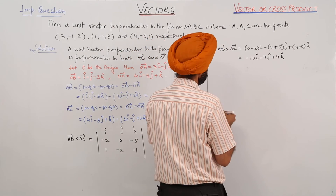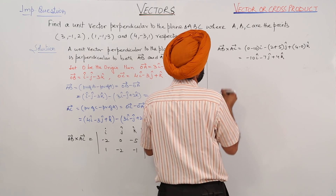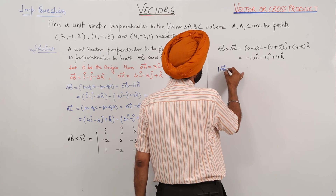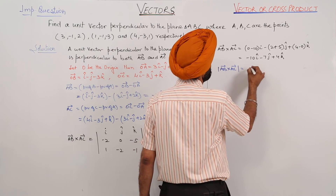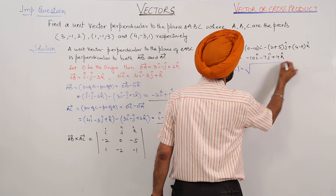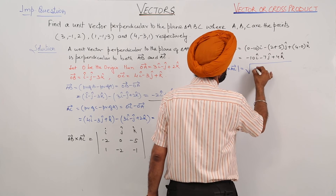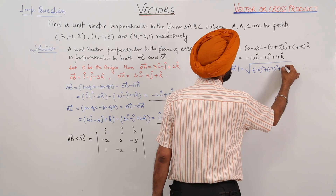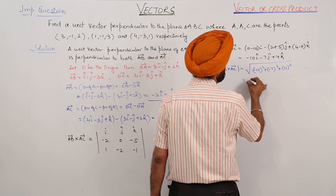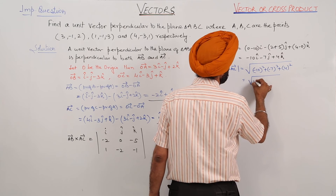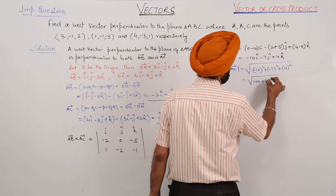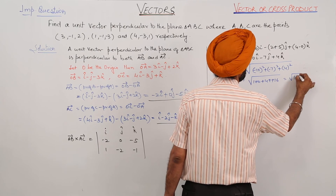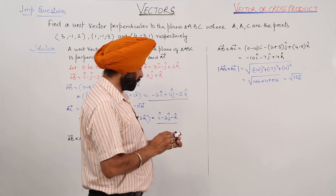The magnitude of vector AB cross vector AC equals the square root of (negative 10 squared plus negative 7 squared plus 4 squared), which is the square root of 100 plus 49 plus 16, equal to the square root of 165.